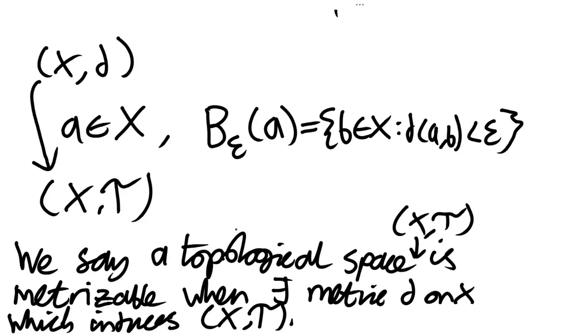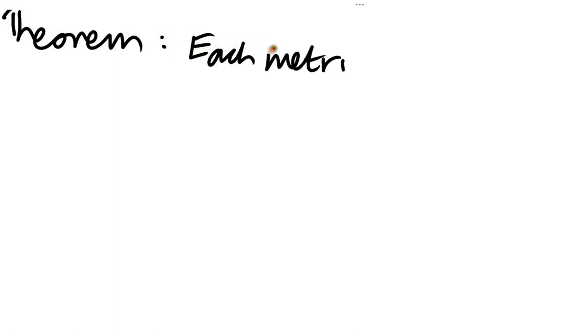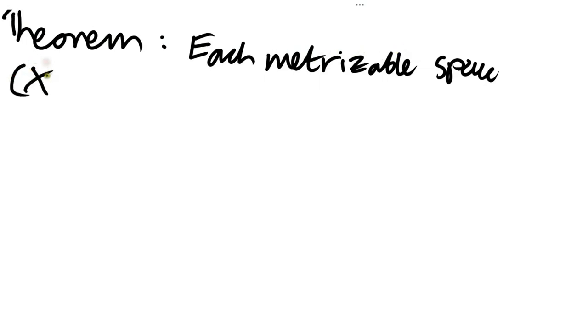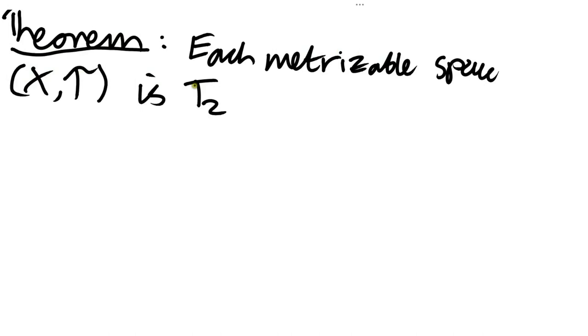We say a topological space is metrizable when there exists a metric d on X which induces this topological space. It turns out that each metrizable space is Hausdorff — in other words, if we have a topological space induced by some metric d, then that's going to be a T2 space. Let's prove it.